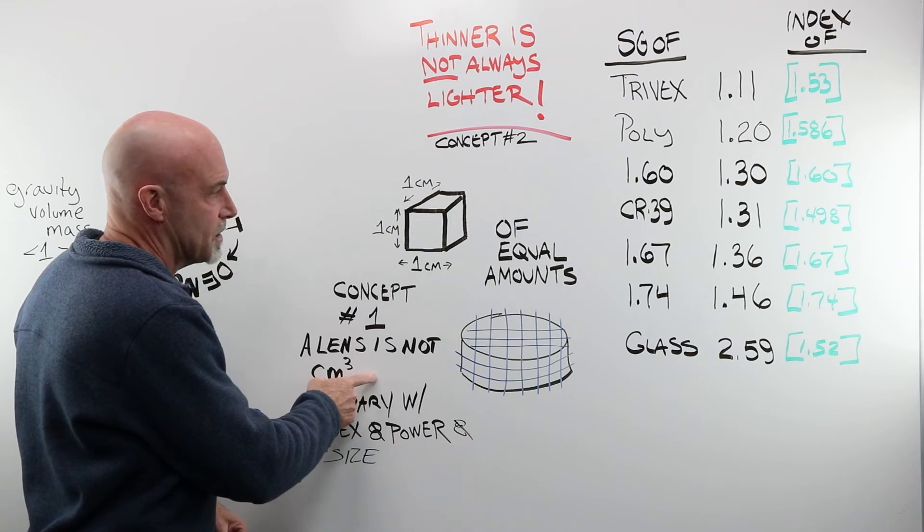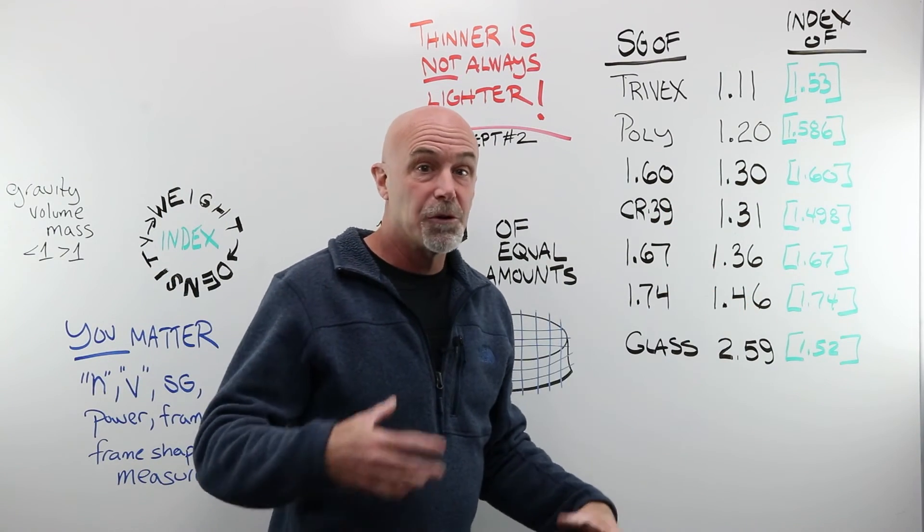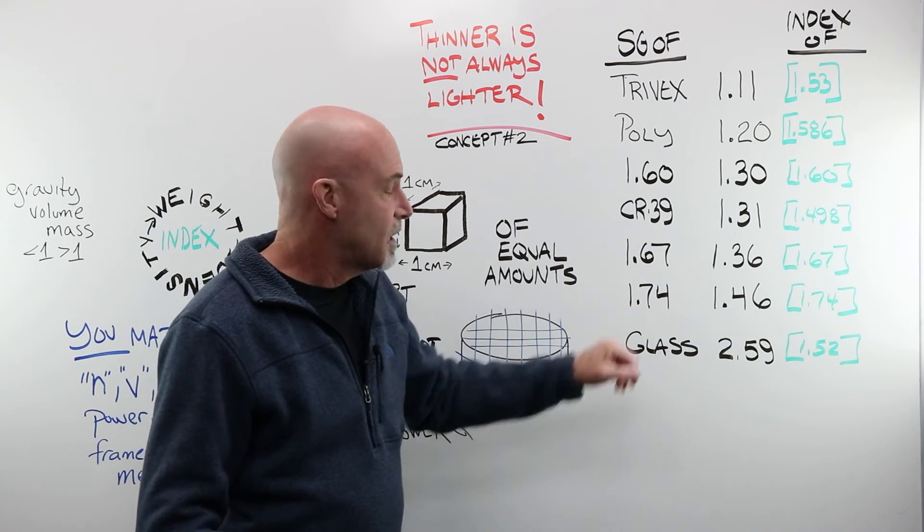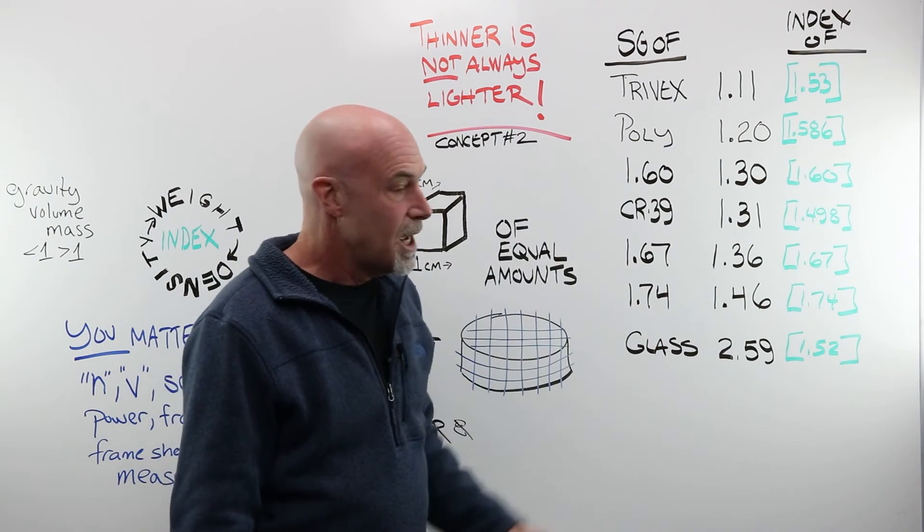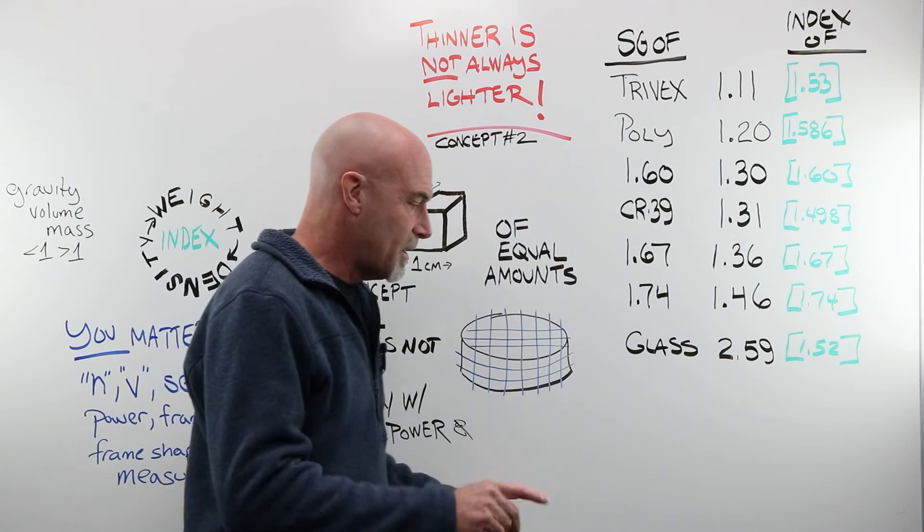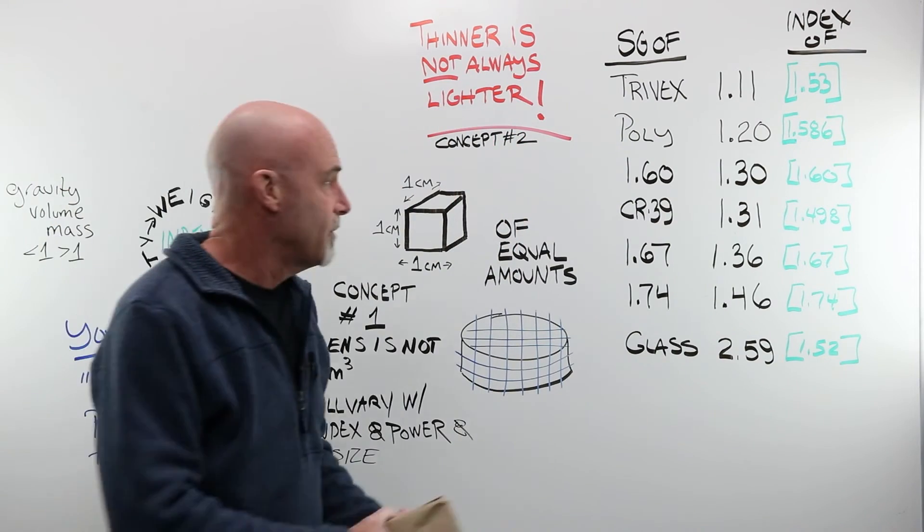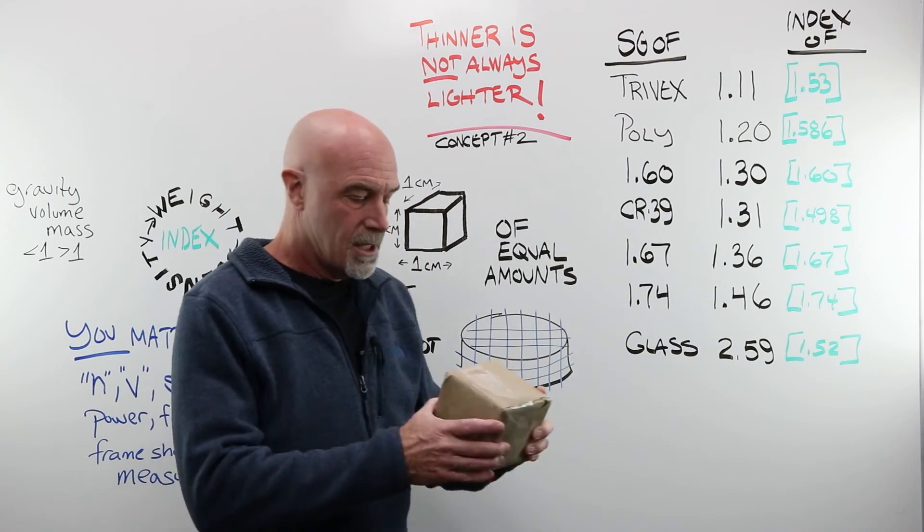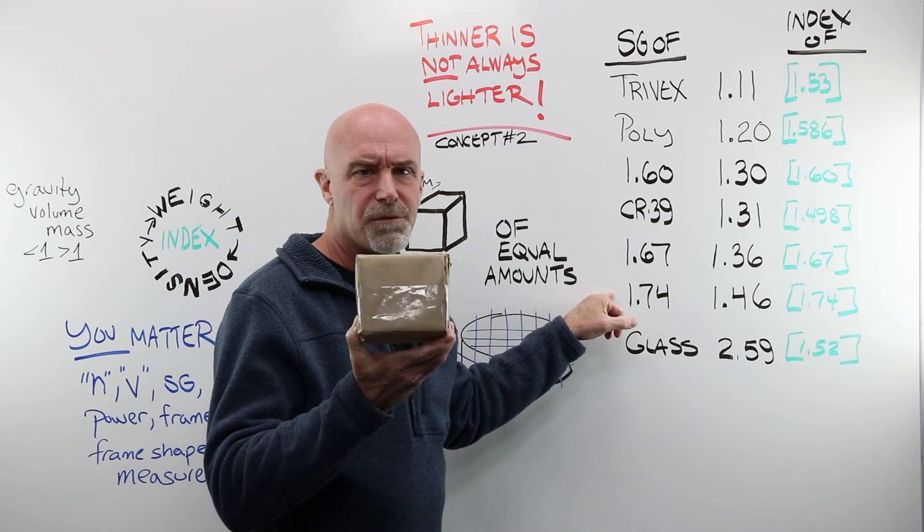Just go back to concept one. The higher the specific gravity of that given material by volume, the heavier it is going to be. Yes, a 174 is going to be most likely thinner than a poly, but it is not going to be lighter. So stop making that mistake. Again, don't talk about things that are not actually related to one another. All you can tell from specific gravity is how much a particular amount weighs. In other words, would I rather carry 10 blocks of trivex up the hill or would I rather carry 10 blocks of 174?